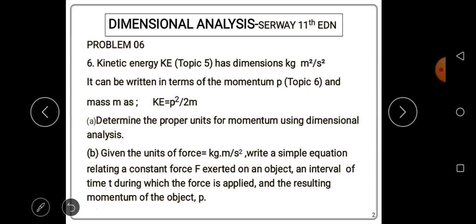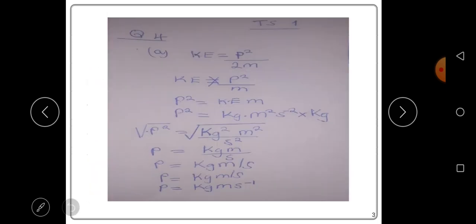So, momentum is represented by a small letter P. So, these are the questions we have. So, let's tackle them. To find the correct units of momentum, we have to do what's here. So, kinetic energy is given by this formula. Kinetic energy is equal to P squared over 2M.